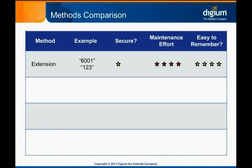The first naming method matches the device name to the dial plan extension that rings the device — these are almost always strictly numerical device names. This method has the advantage that it's easy to remember a particular device name, but despite its popularity, it has significant disadvantages. Tightly coupling device naming and dial plan mapping reduces flexibility by making it more involved to change either. Additionally, this method isn't as secure: it's often easy for a potential attacker to learn someone's extension from a company directory or business card. If they can infer the device name from the extension, they can try to brute-force guess the password for that device. Decoupling device names from extension names is one way to prevent this.